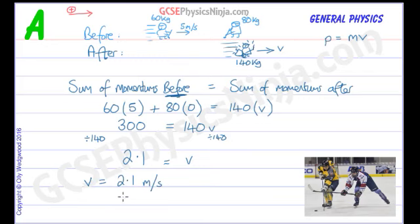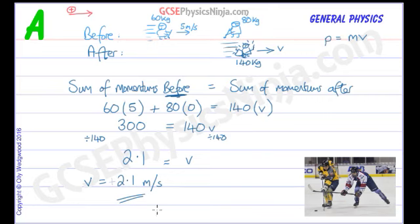That is the velocity of both players after they've collided — now all tangled up moving across the ice at 2.1 meters per second. Notice that it's positive, so we know it's going in the positive direction. If it came out as negative, then it would be going the other way.